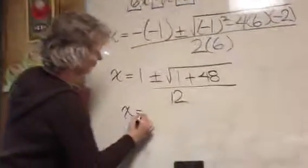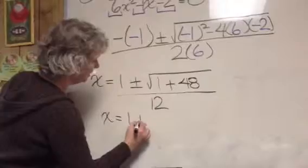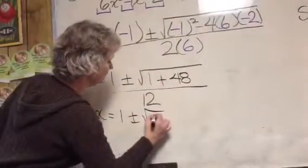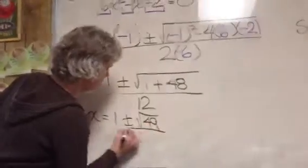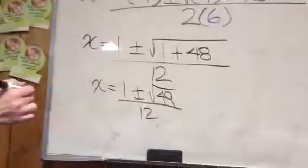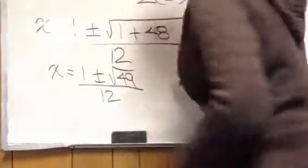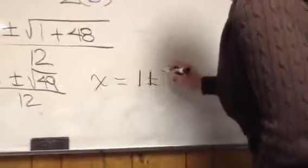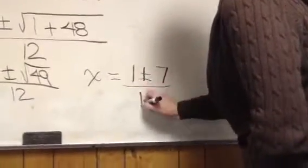x equals 1 plus or minus, what's the square root of 1 plus 48? 49. So the square root of 49 over 12. So x equals 1 plus or minus 7 over 12.